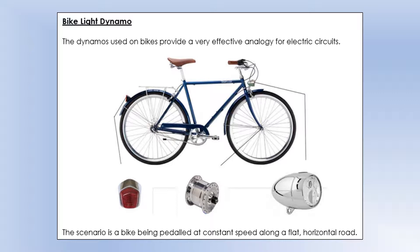The way this works is there's a little generator attached to the bike wheel. So as the bike wheel spins, it spins the generator and that powers a light, in this case on the front and the back. So that's generally how a dynamo works. But we're going to use it as an analogy for an electric circuit.